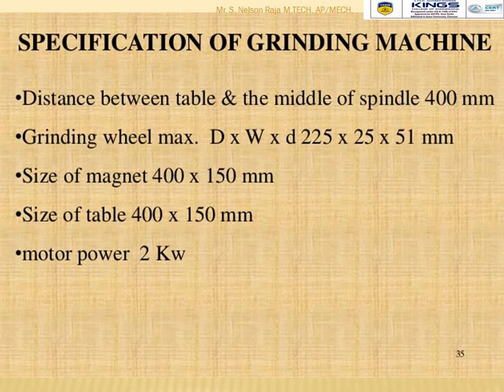A grinding machine specification includes: distance between table and middle of spindle up to 400 mm; grinding wheel maximum diameter and width — smaller diameters of 225 mm, 25 × 51 mm; size of magnet 400 × 150 mm representing length and width; size of table 400 × 150 mm; and motor power of 2 kilowatts.